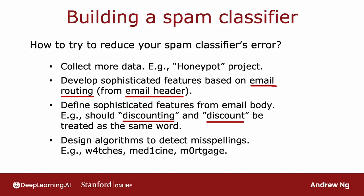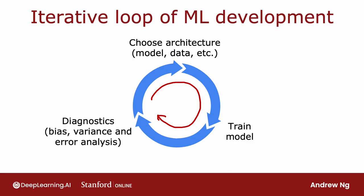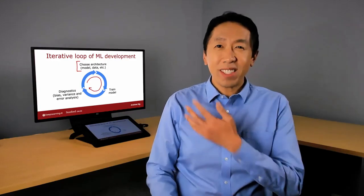For example, if your algorithm has high bias rather than high variance, then spending months on a honeypot project may not be the most fruitful direction. But if your algorithm has high variance, then collecting more data could help a lot. During the iterative loop of machine learning development, you may have many ideas for how to modify the model or the data, and it will be diagnostics that give you guidance on what choices could be most promising. In the next video, I'd like to start describing the error analysis process, which is a second key set of ideas for gaining insight about what architecture choices might be fruitful. Let's take a look at what error analysis looks like in the next video.